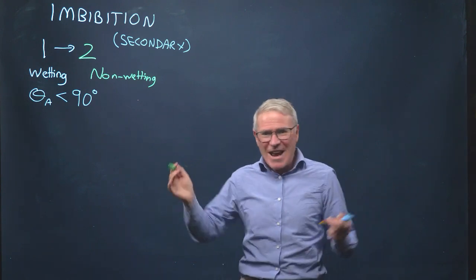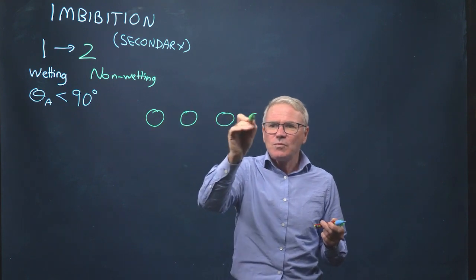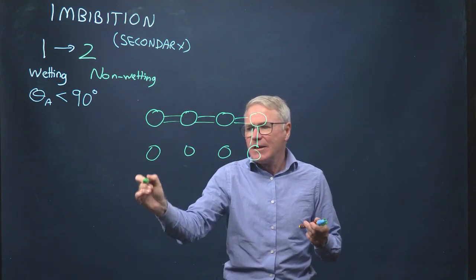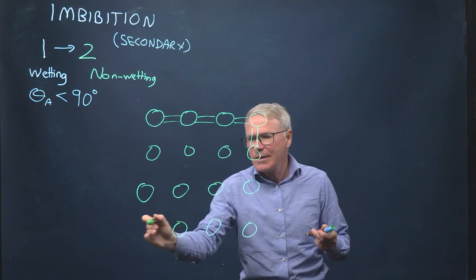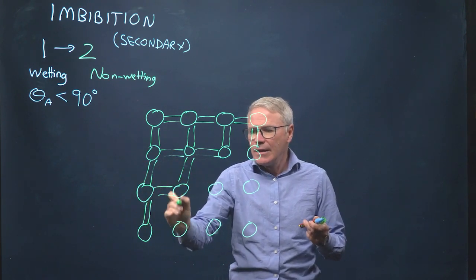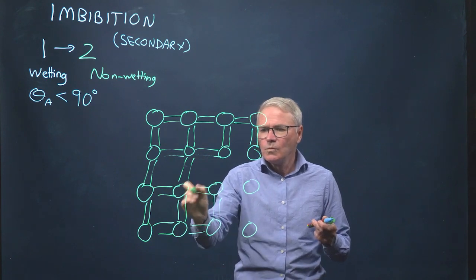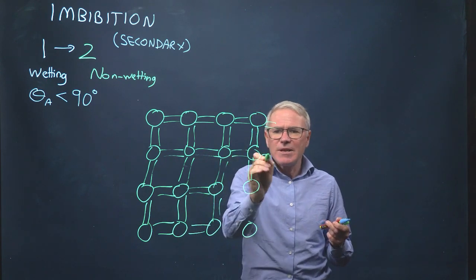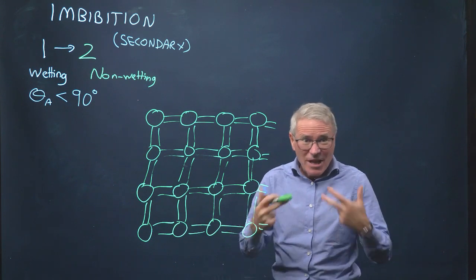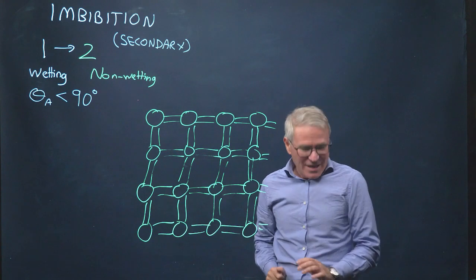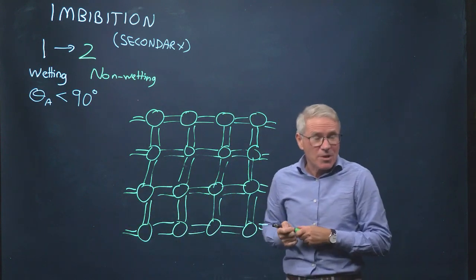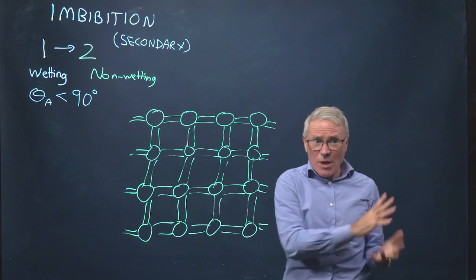So we're going to draw our example porous medium again, and I'm showing it in green here because I'm going to assume now that the pore space — in terms of the centres of the pore space — has been filled with phase 2. So we've injected phase 2, we've done primary drainage, and we've filled basically most of the pores and throats.